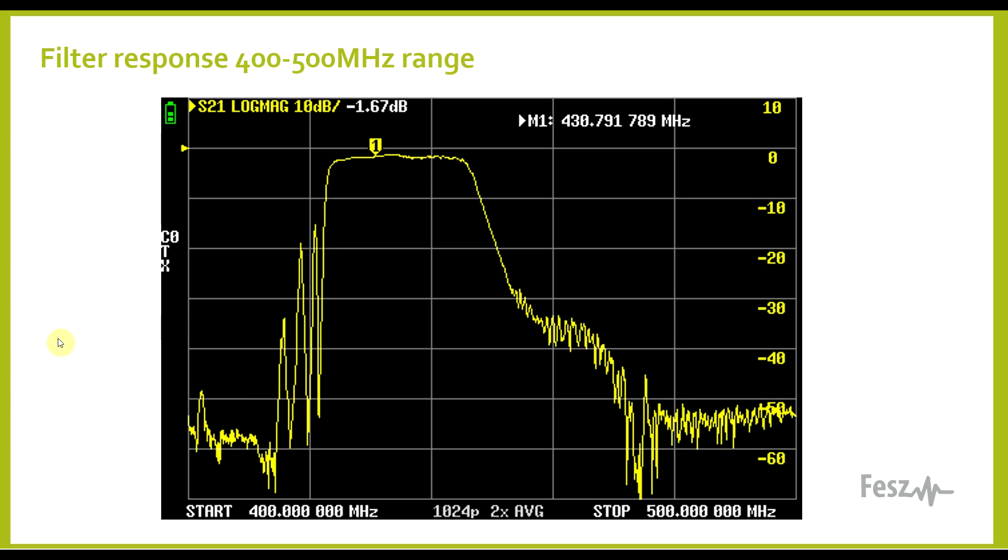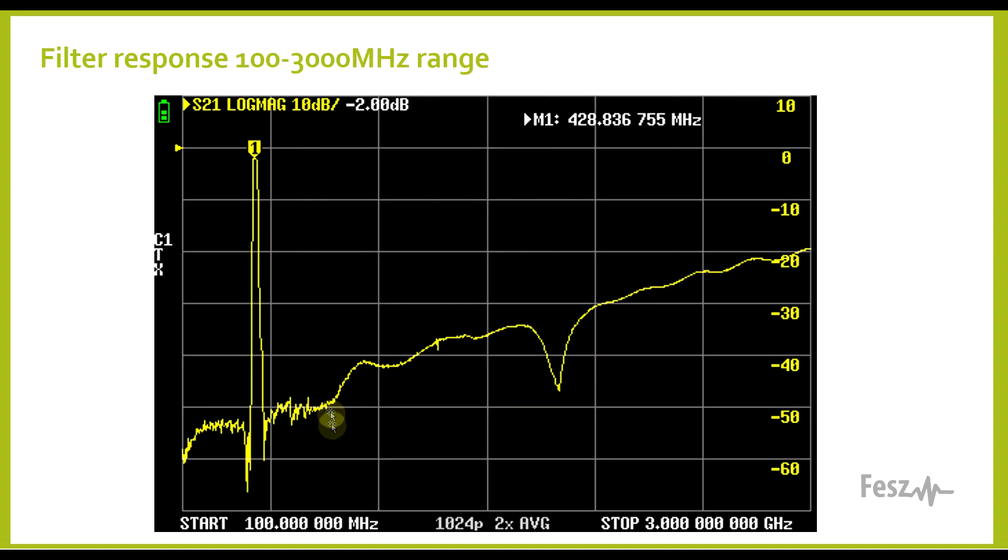Regarding the measurement, if we zoom out a bit, so here I re-measured starting from 100 megahertz up to around 3 gigahertz, we can see one of the nice features of the SAW filter, which is that the passband at 400 something megahertz is only in a single place. Other than the 435 megahertz interval, there is no other point on this measurement curve where signal passes through the filter. The SAW filter is really good at removing high frequency harmonics.